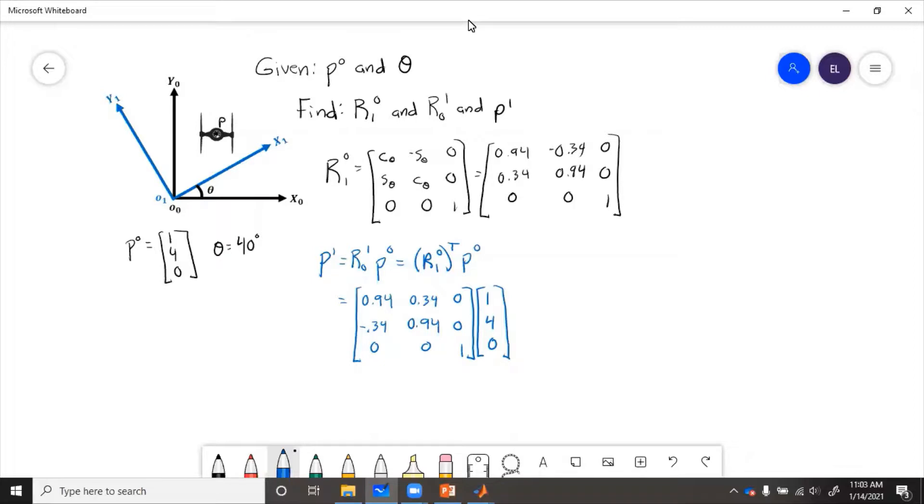So if you recall, we multiply the row by the column to get the first element, second row times the column gets the second element, third row times the column gets the third element. So we do that out and we're going to multiply this times this plus this times this plus this times this. So then that will be 0.94 plus 0.34 times 4 and then plus 0 times 0.